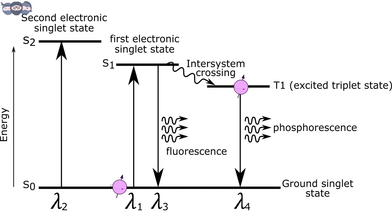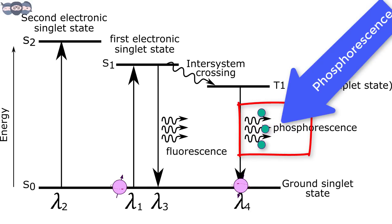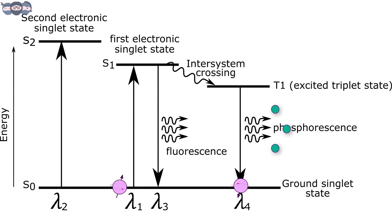They stay there for some time before transitioning to the ground singlet state. This transition is accompanied by emissions being released. This phenomenon is called phosphorescence. Even phosphorescence helps one perform analysis of an analyte.